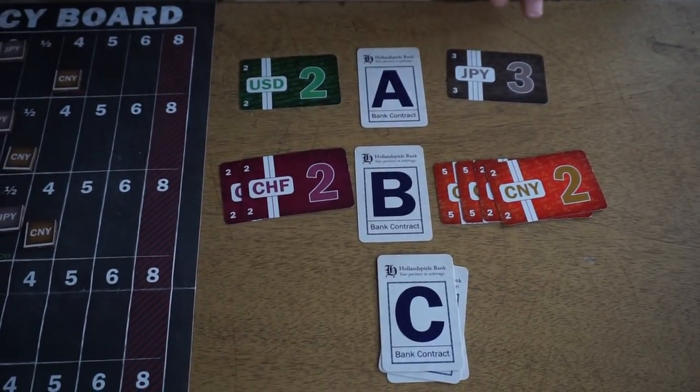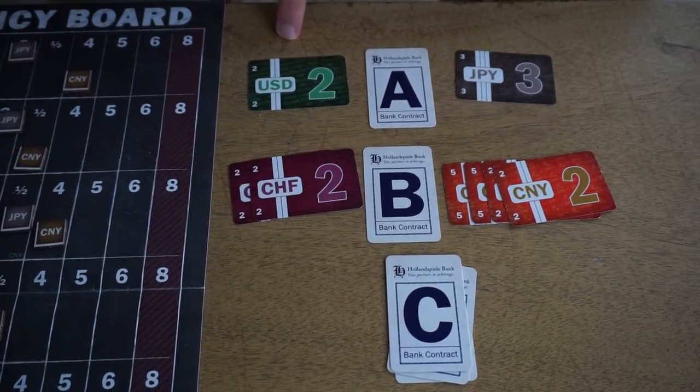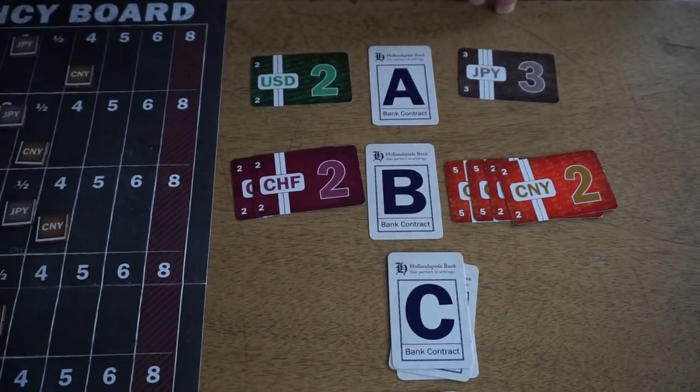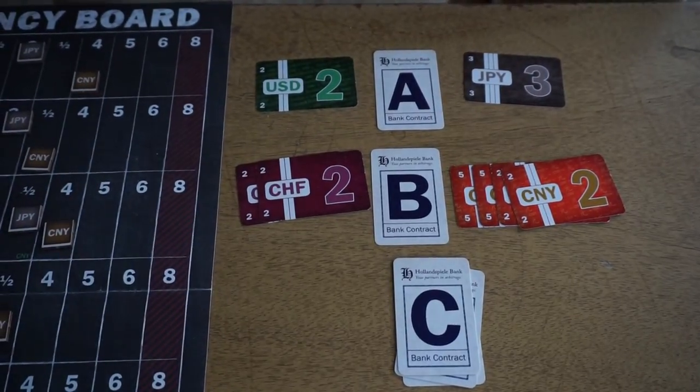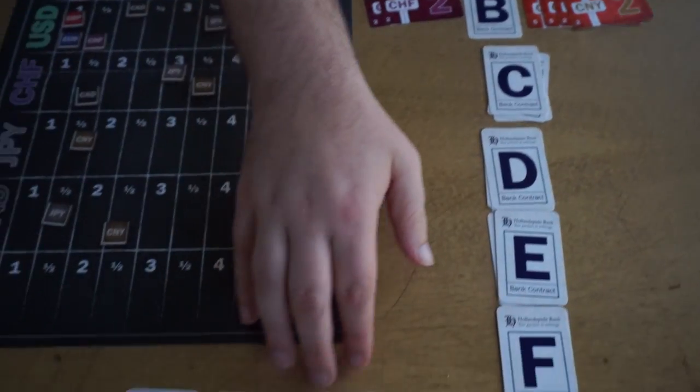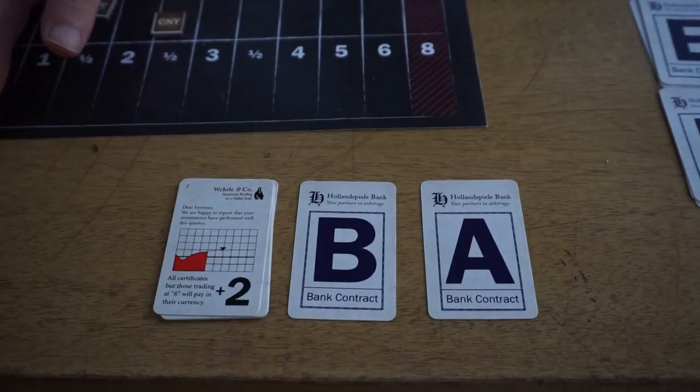So regardless of the fact that JPY is now worth seven of them is now the exchange for two USD, he's going to pay two USD and get three JPY. So let's resolve that and see what that looks like. So the fourth action you can take is resolving a contract. And that involves resolving the first item in the contract queue, which runs along here.